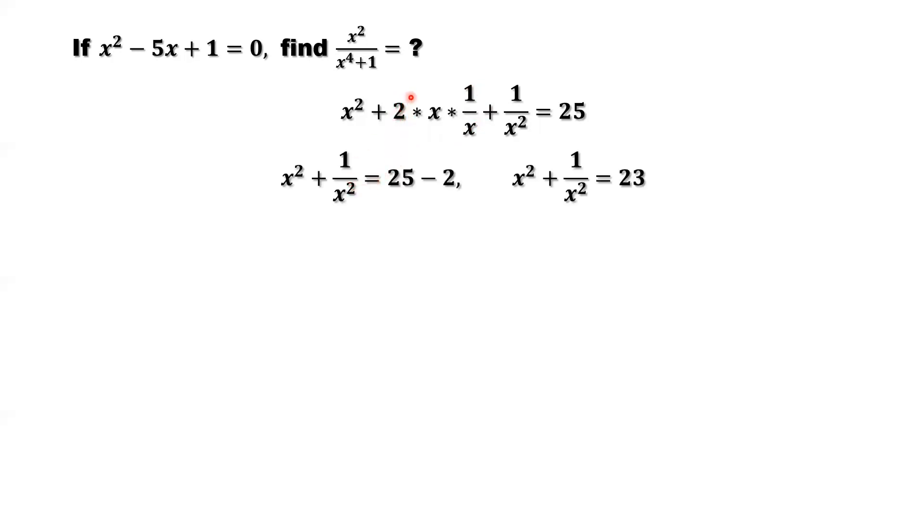We can move 2 to the right-hand side. Here is x squared plus 1 over x squared equals 25 minus 2, which is x squared plus 1 over x squared equals 23.